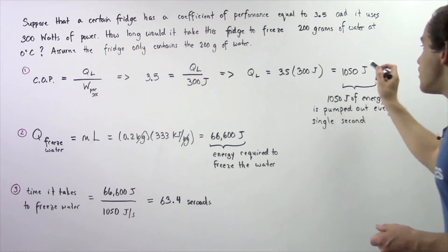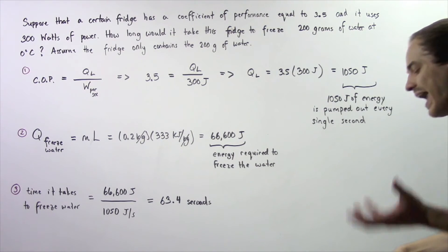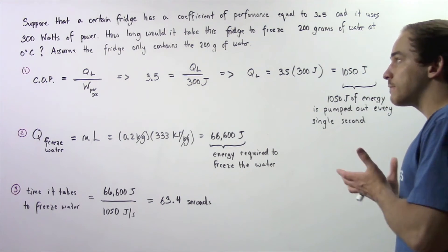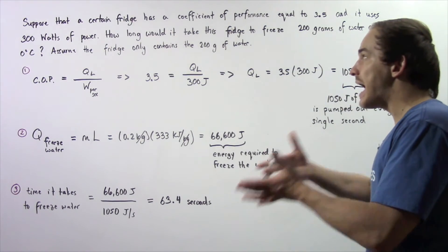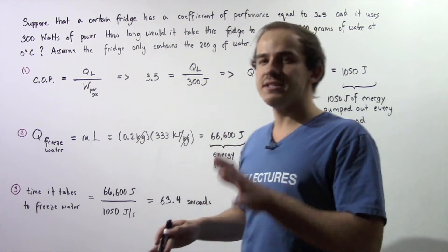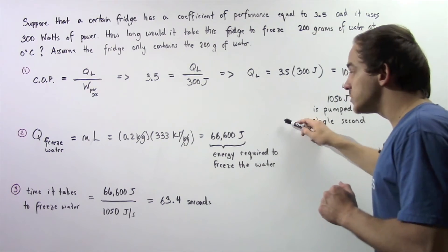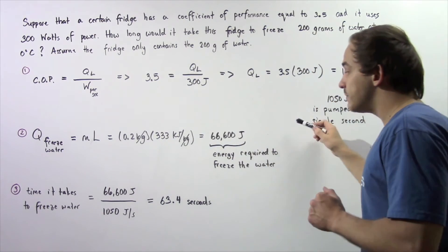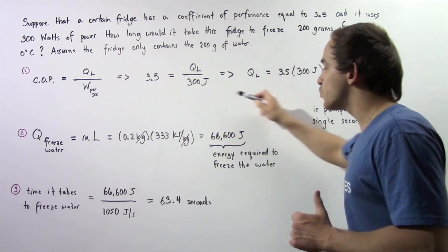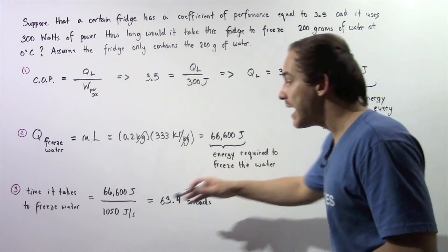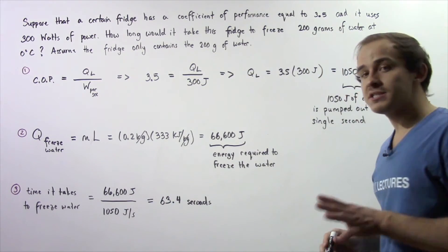So we know 1050 joules of energy is pumped out of our freezer. So that means it's pumped out from our water every single second. So that's the rate. So that means if we divide how much energy is required to freeze it by the rate, that will give us the time.